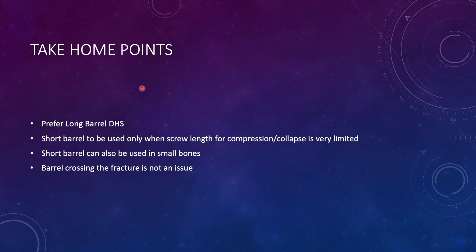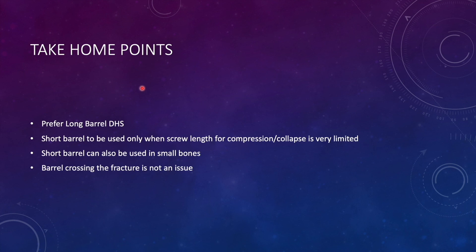The take-home points from this presentation: prefer long barrel dynamic hip screw whenever feasible. Keep in mind the length of screw available for compression — if it is 25 millimeter or more, it is very good; if it is around 20 millimeter, it can be accepted in most situations when bone stock is good. Short barrel has to be used whenever this length is very limited and you anticipate that the screw threads will touch the barrel in follow-up. For short stature patients with short bones, use the short barrel dynamic hip screw. Barrel crossing the fracture should not be an issue — stability is always the priority and long barrel should be used whenever possible. Thank you.